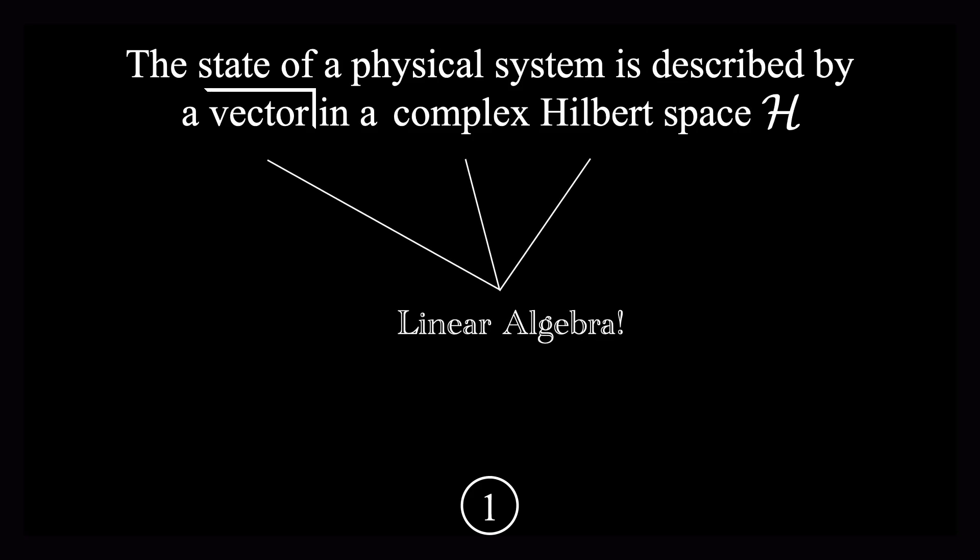The first is that of a vector. The second is that of a Hilbert space. And the third is what it means for a Hilbert space to be complex. In quantum mechanics, a vector is not the arrow in space vector that appears throughout intro physics courses. Rather, it is an abstract mathematical vector. And in this case, one that lives in something called a Hilbert space.